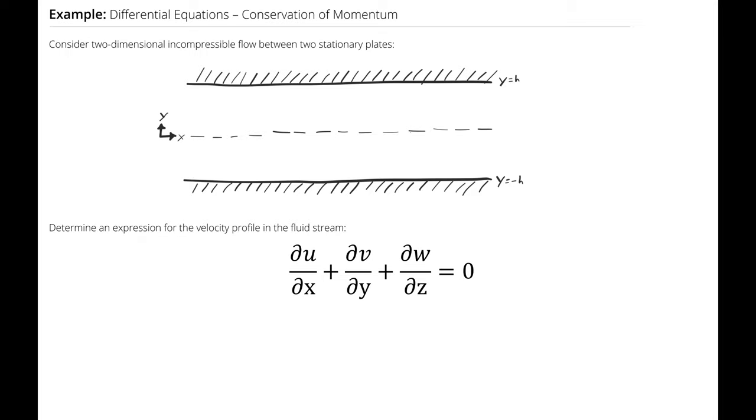I recognize that the flow is only being driven from left to right, so there must be no y nor z component of velocity. That means that ∂u/∂x must be zero, which means that u is only going to be changing in the y direction. So just like in the previous example, u is only a function of y.